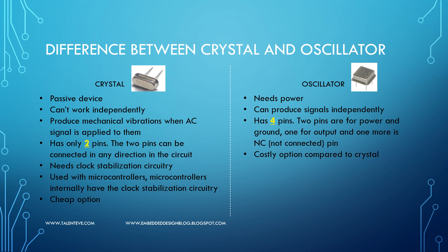Before going to the clock, we will talk about the basic difference between a crystal and an oscillator. A crystal is a two-pin passive device, whereas an oscillator needs power to operate. A crystal cannot work independently — it must be added to with additional circuitry including a buffer, a resistor, and capacitors for resonance, so that it produces the required mechanical vibration.